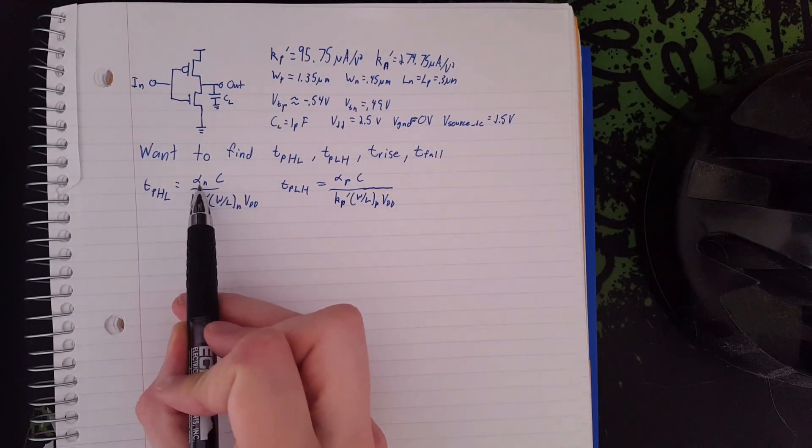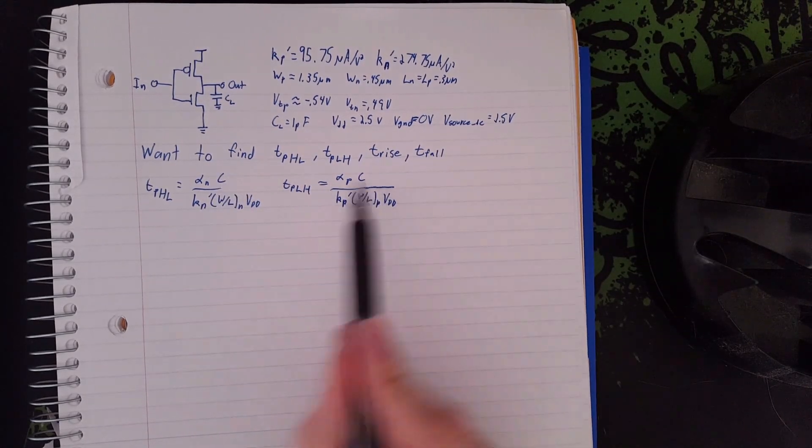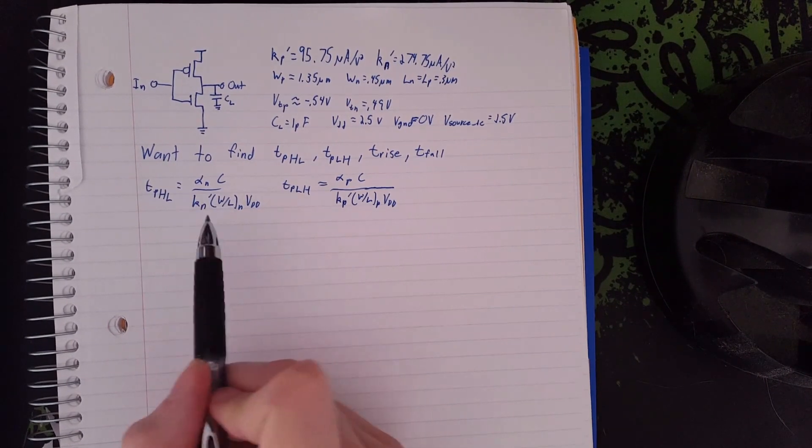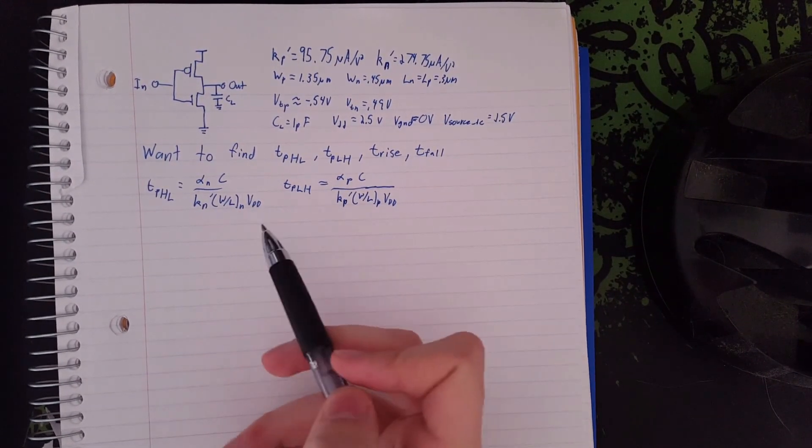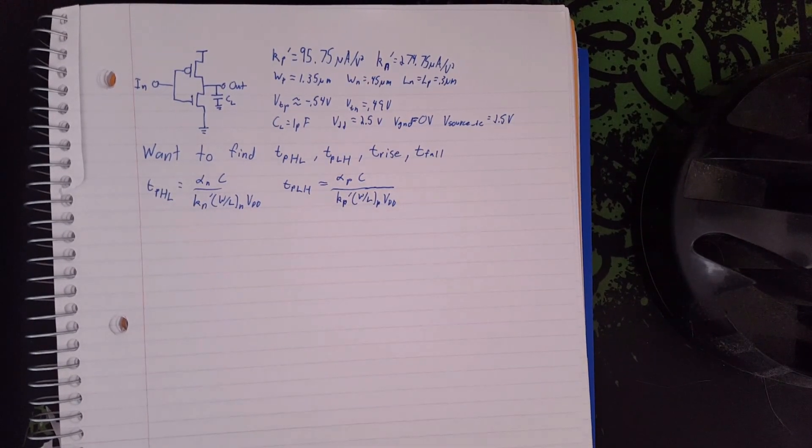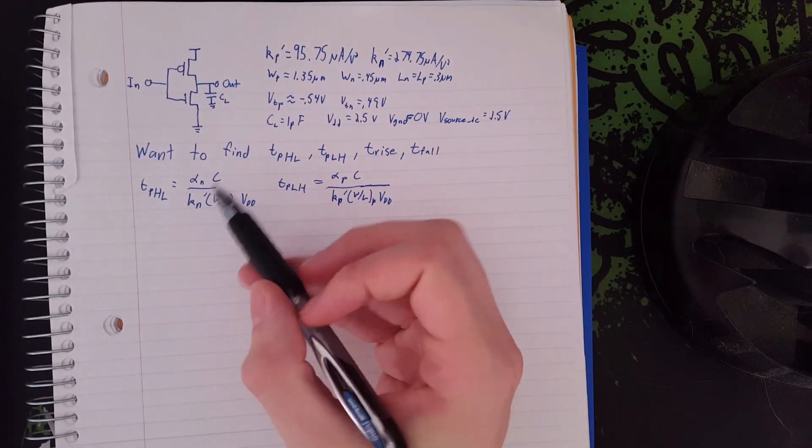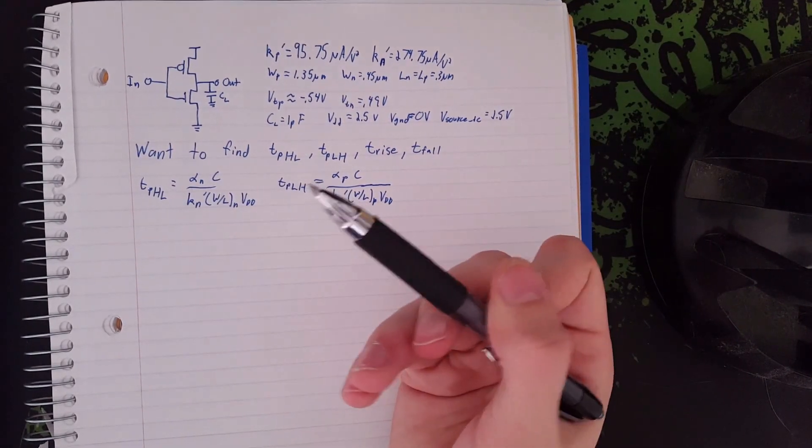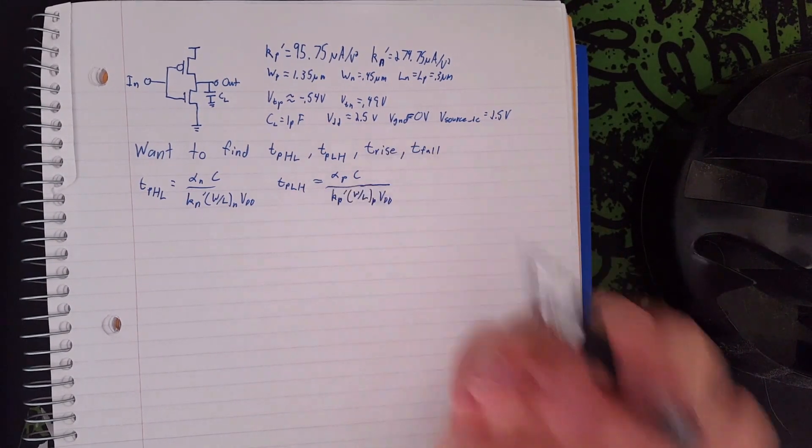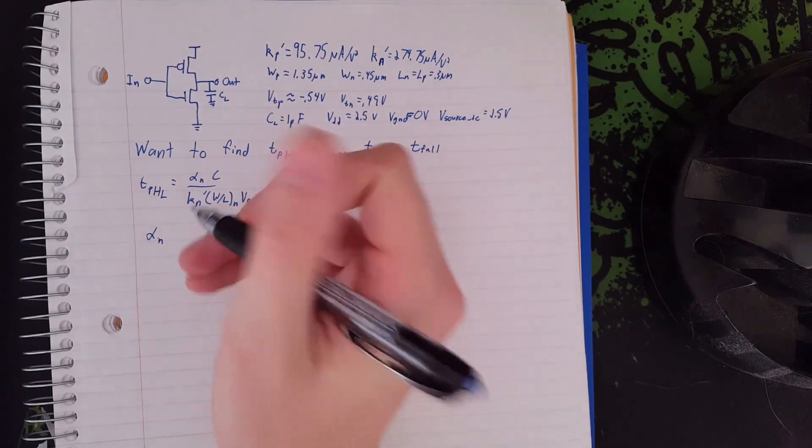So you can see we have these constants here, alpha N and alpha P, and then we have the load capacitor divided by the KN prime times W over LN times VDD. This is just the time response of the current and how long it takes it to reach 50% of the final value. The equations for these alphas are also in the lecture slides.